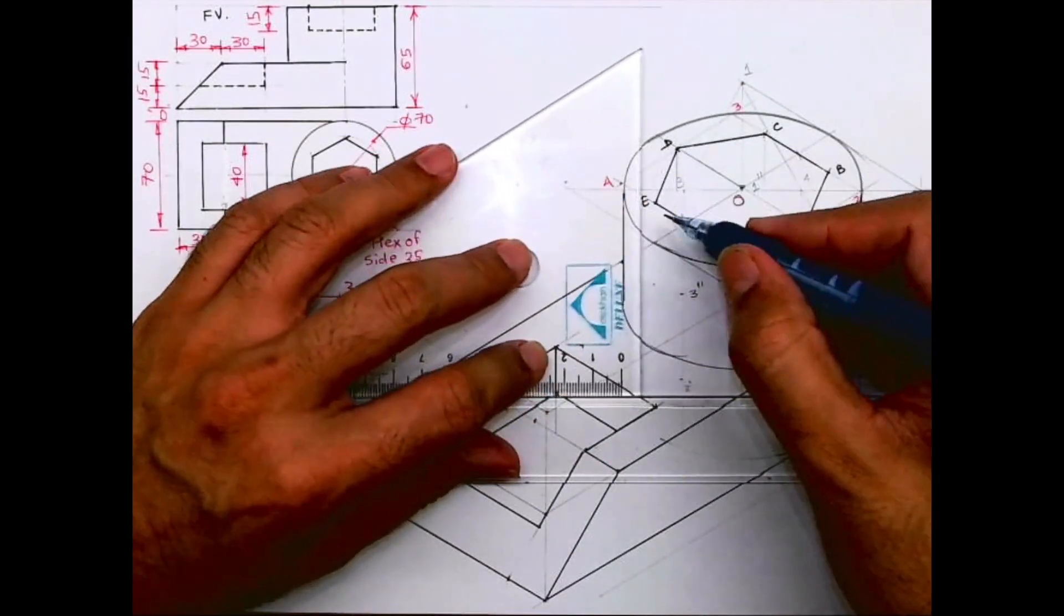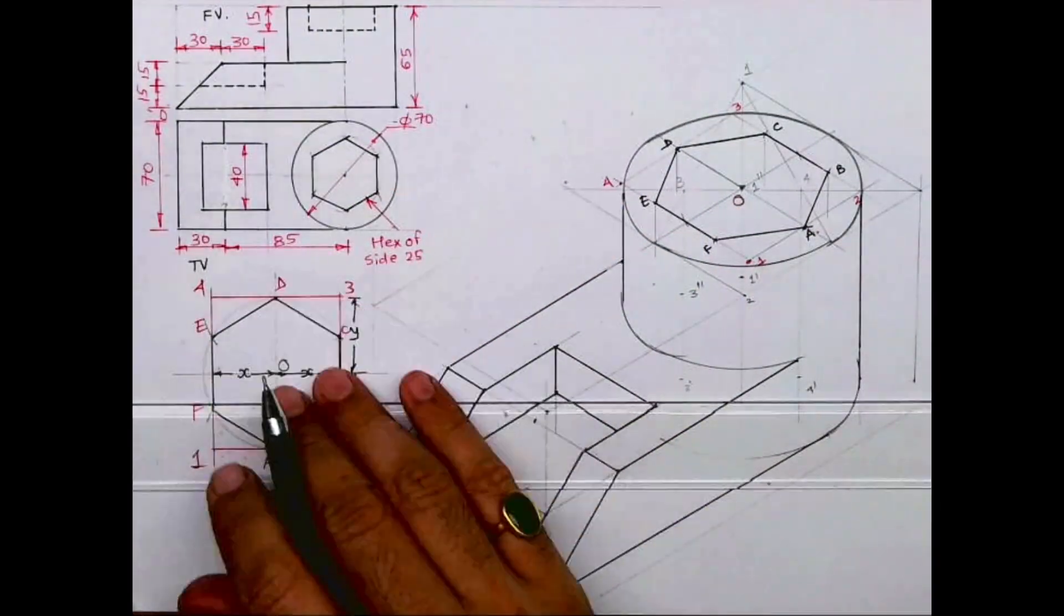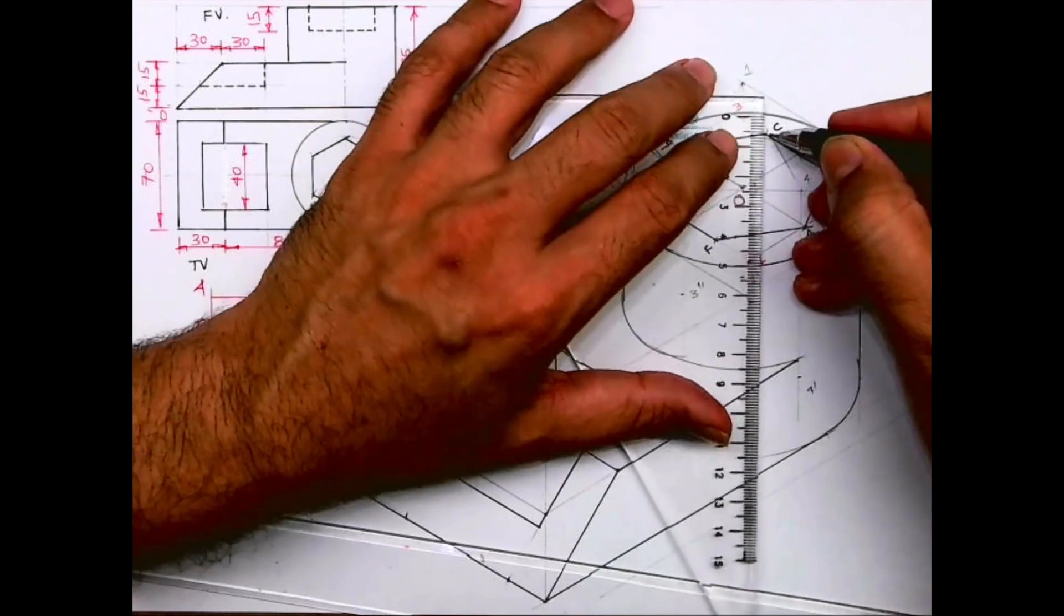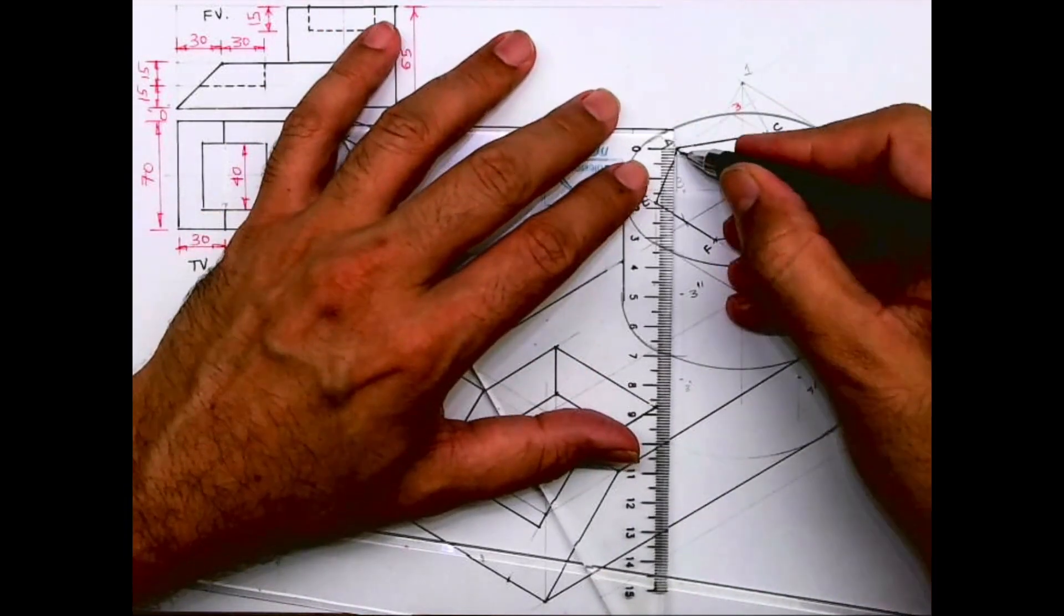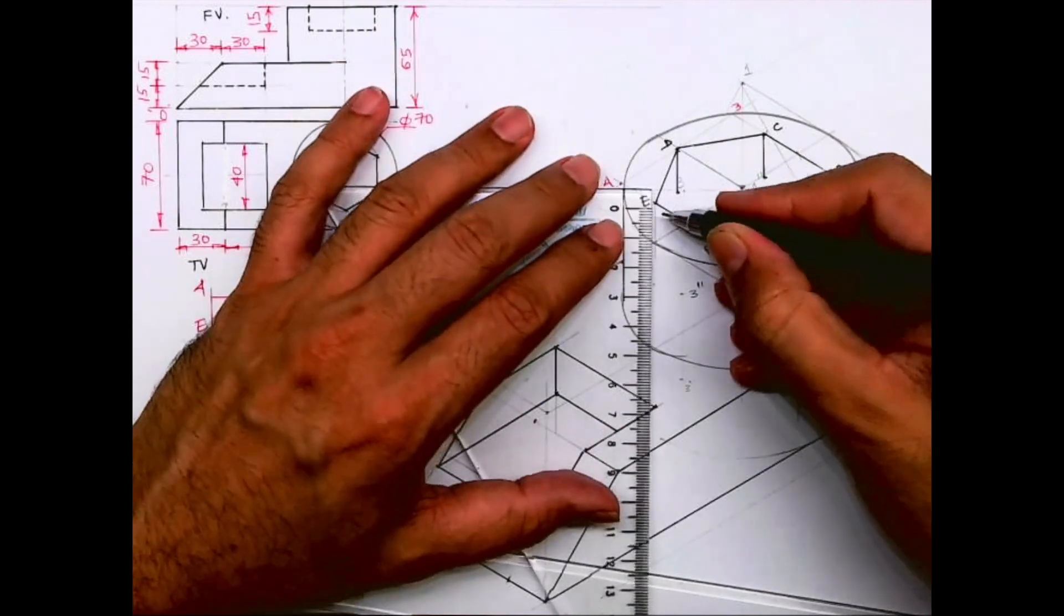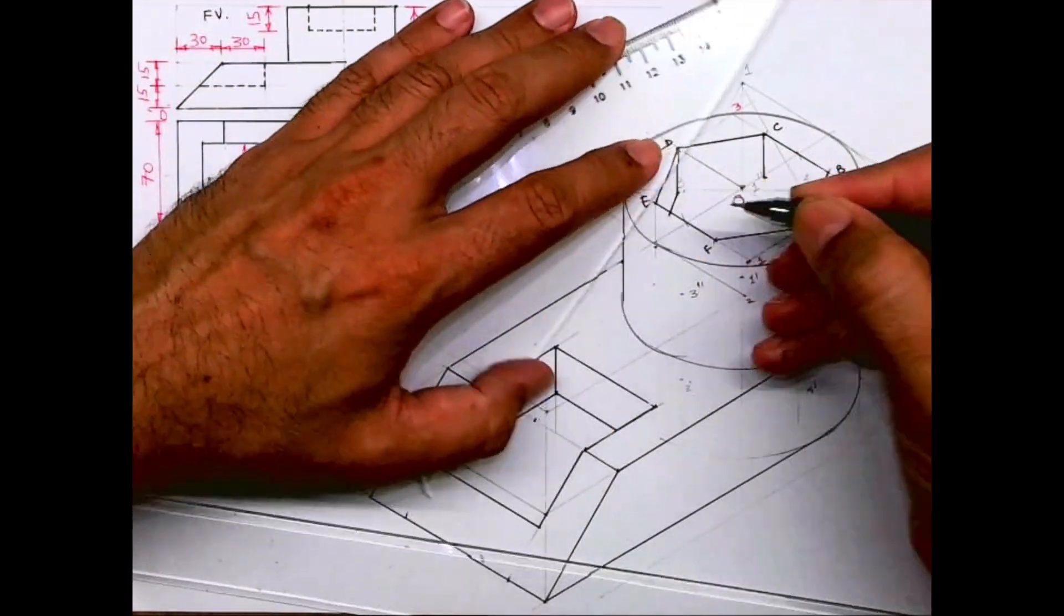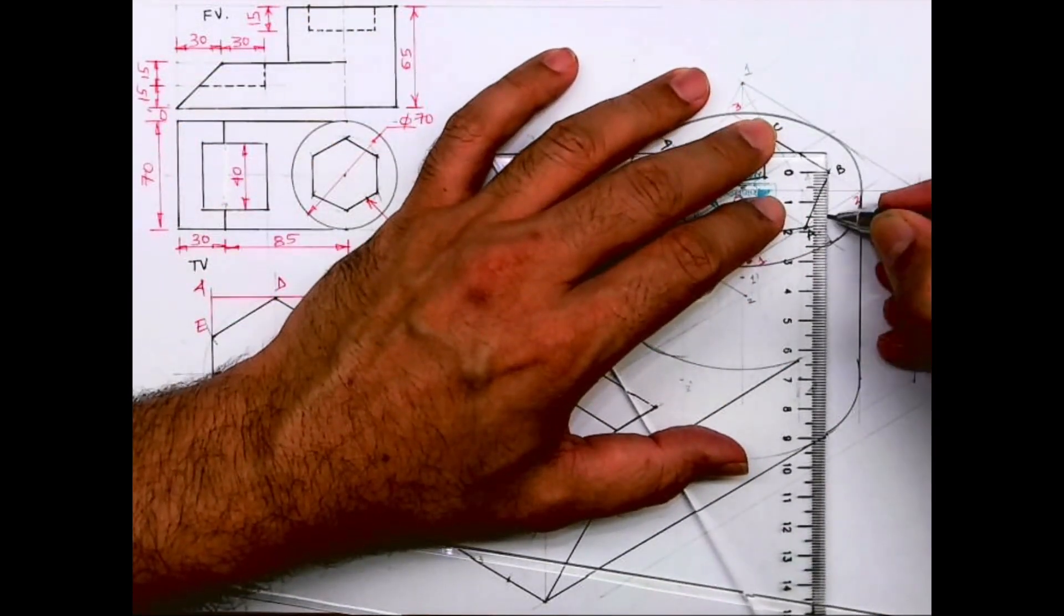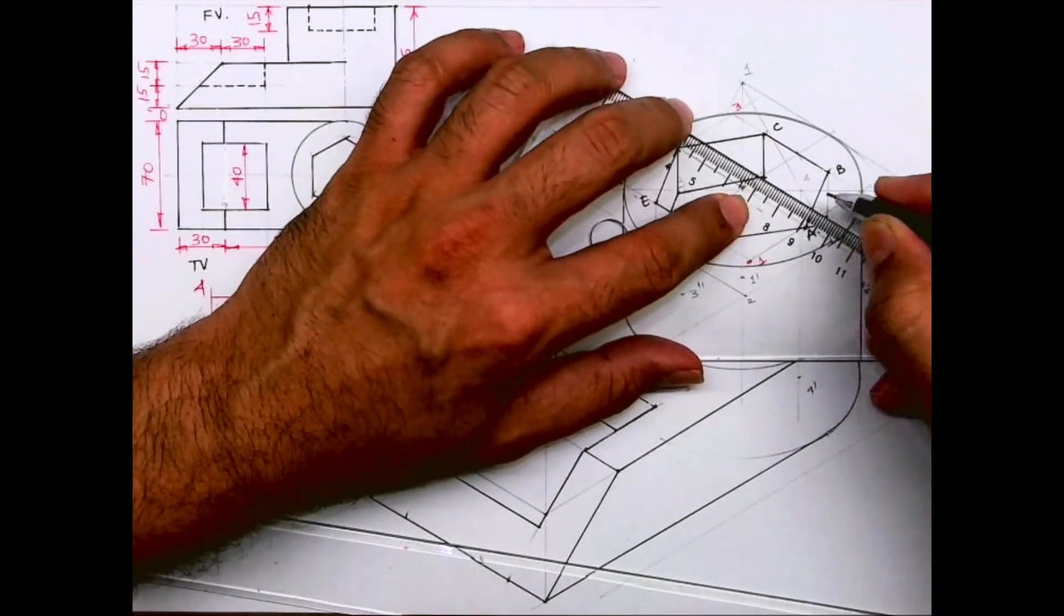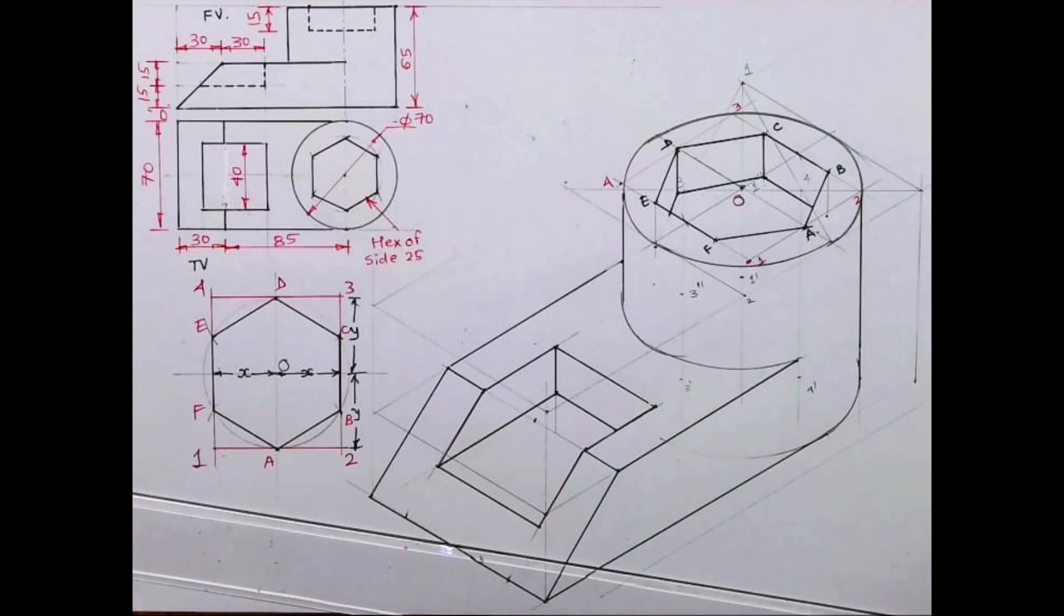After that you draw vertical line which is 15, 15, 15. And you join this, you show this depth. See, you take 15 from here also. So by doing this you are done with this sum.